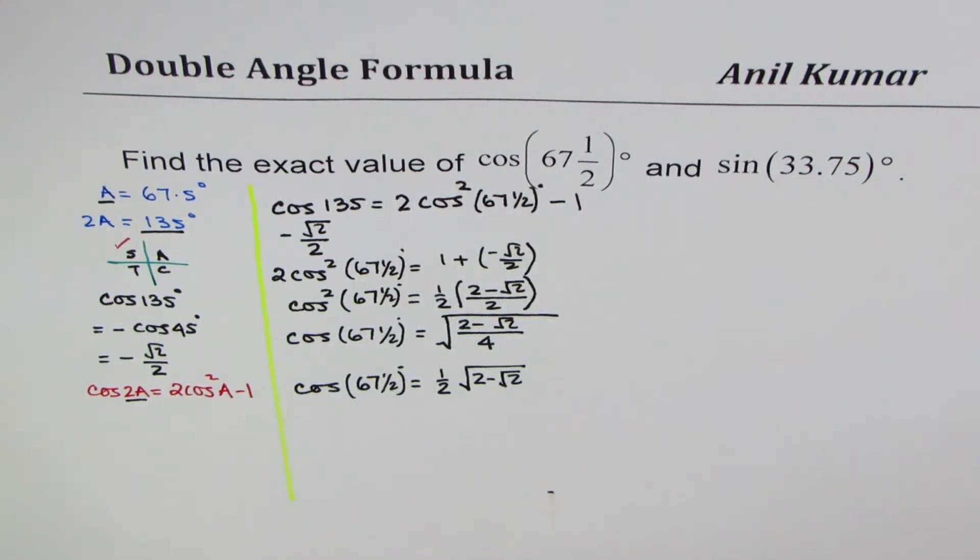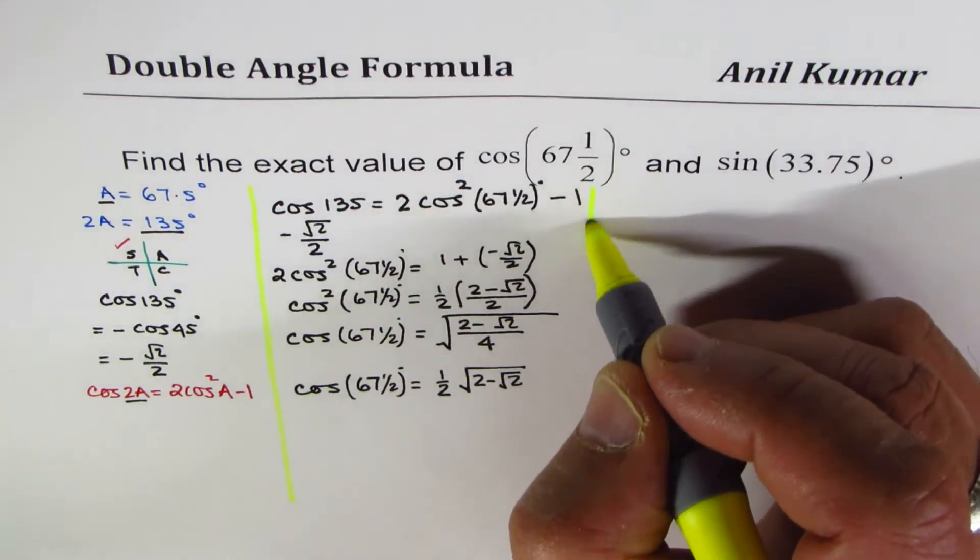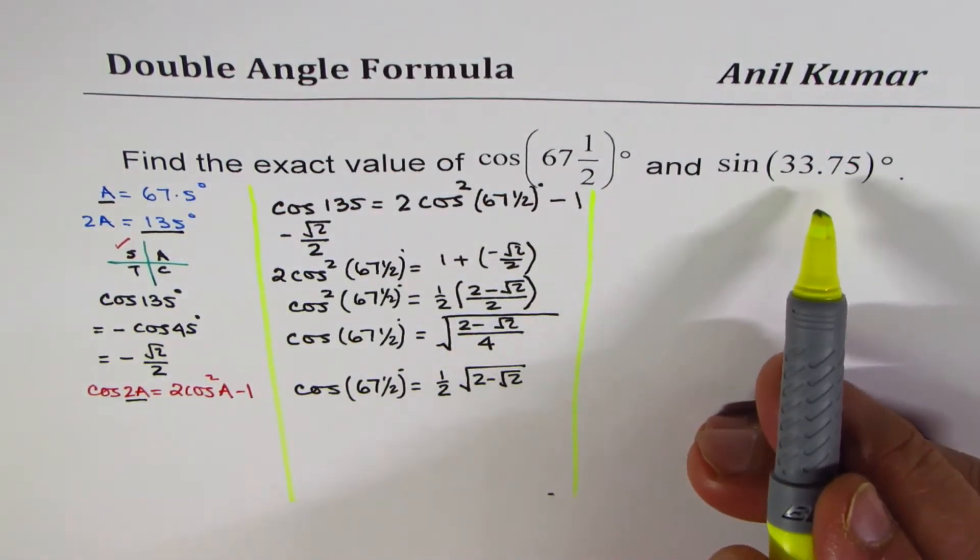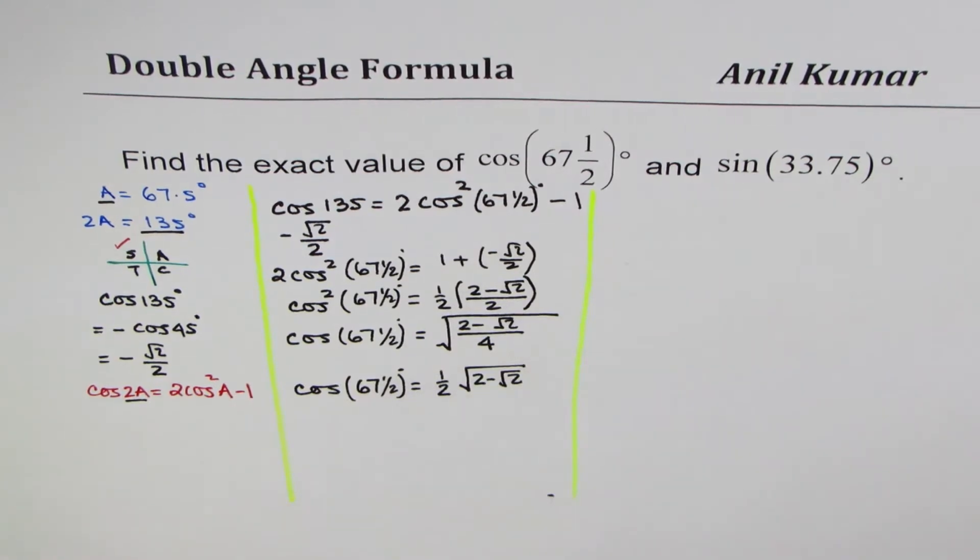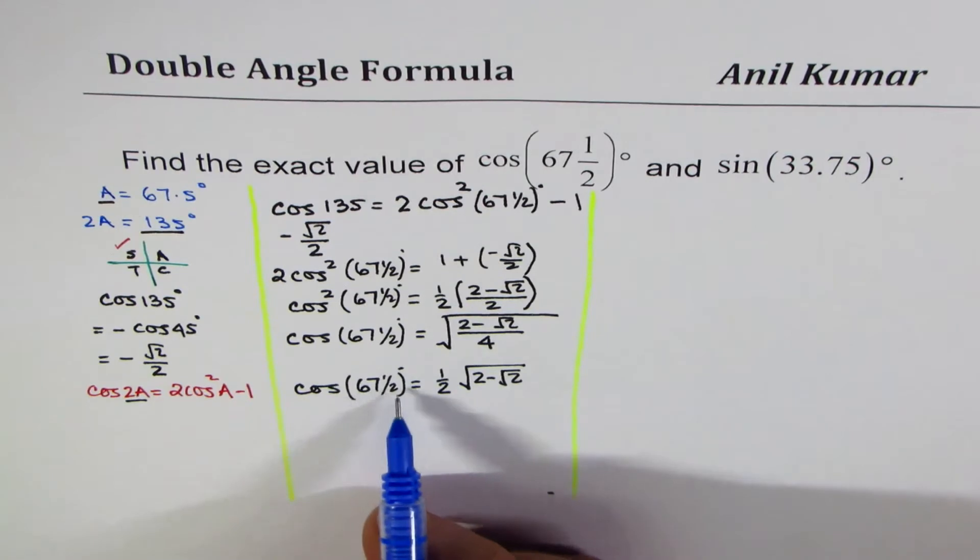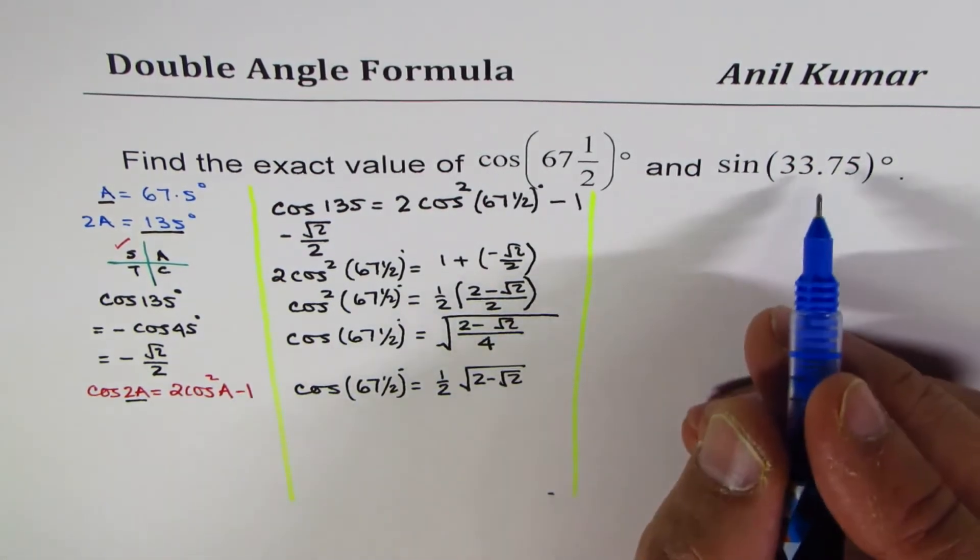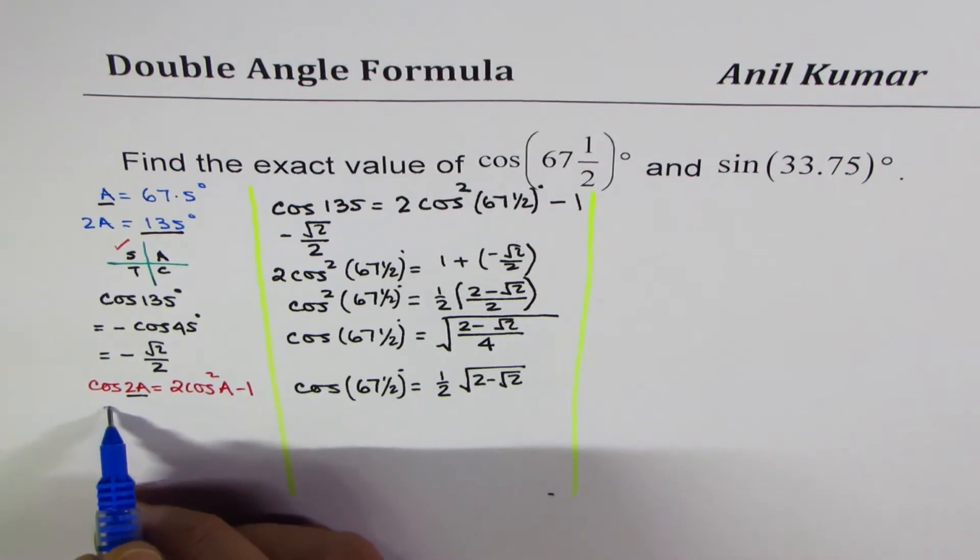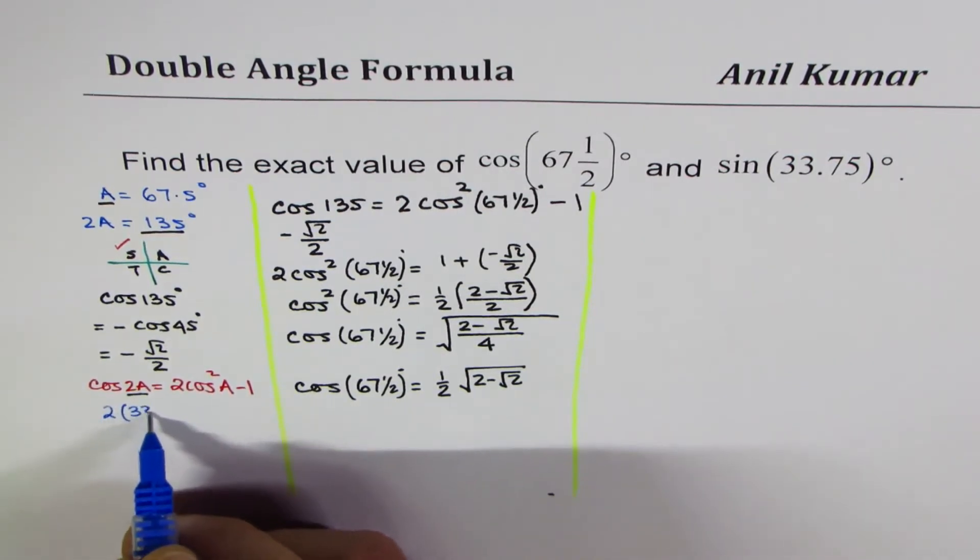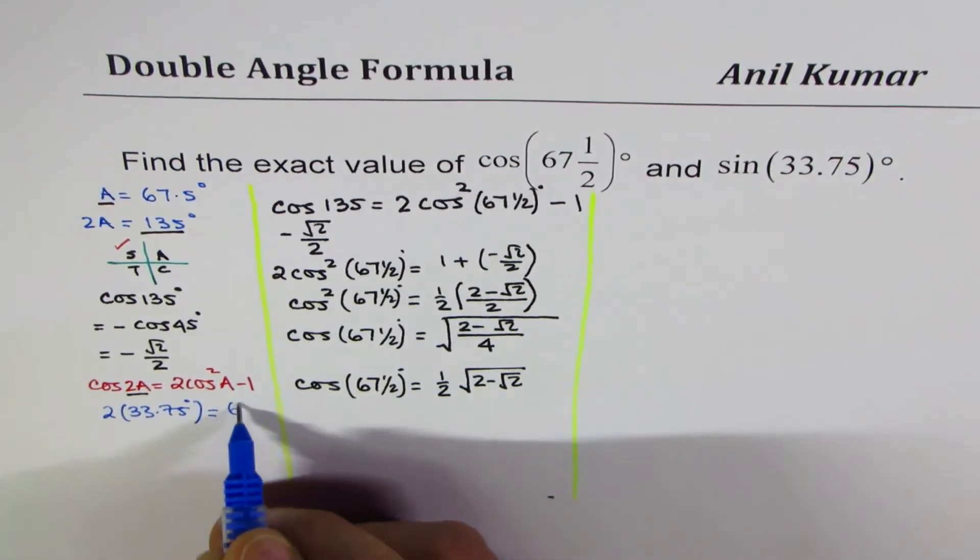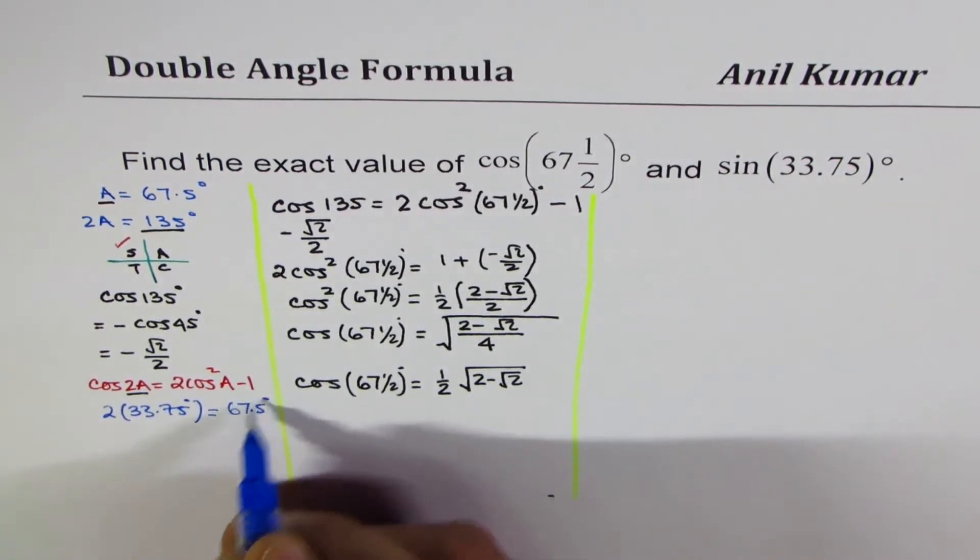And now we will see how to find the value for sine 33.75. Now, 33.75 is half of 67.5. So what we realize now is that twice 33.75 degrees is equal to 67.5 degrees.